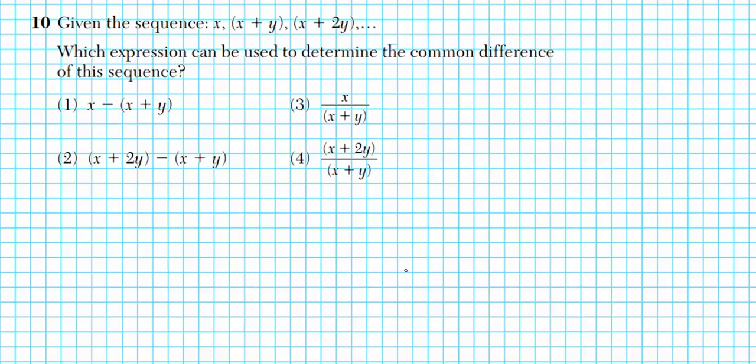Alright. Let's take a look at question number 10, the last in this review installment. It says, given the sequence x, x plus y, x plus 2y, which expression can be used to determine the common difference of the sequence? So the common difference formula d, let's write it down. Common difference d is given by a_n minus a_{n-1}. This is just the symbolic way of saying you subtract the term from the term before it in order to compute the common difference. So examples, you can say a_2, what's before a_2? a_1. Or you can say a_3, what's before a_3? a_2. Or you can say a_4, what's before a_4? a_3.